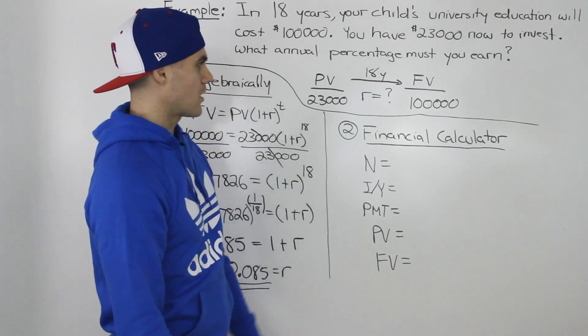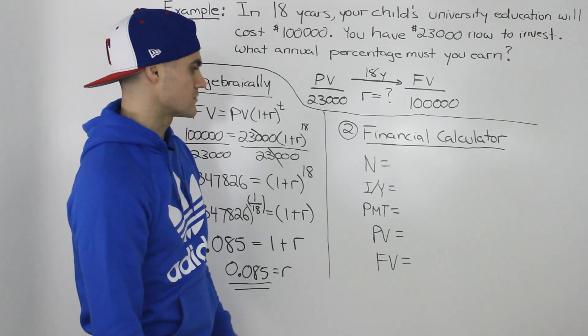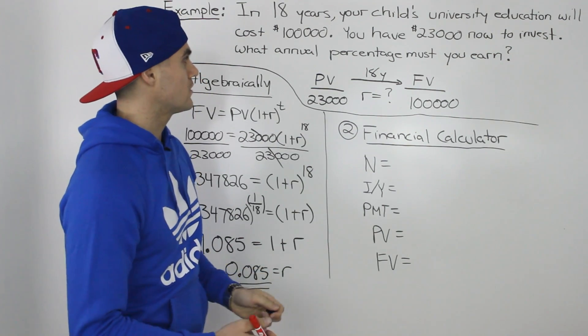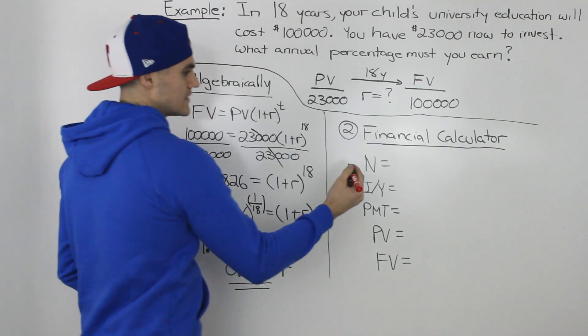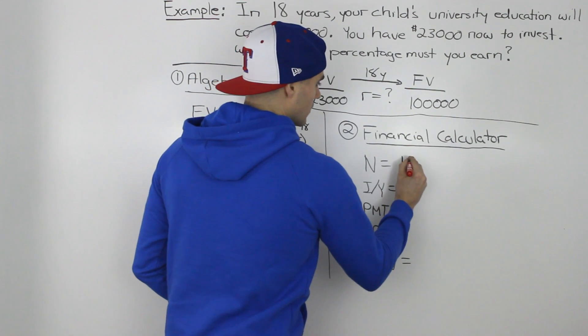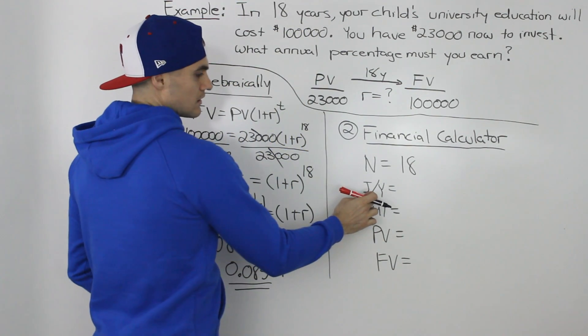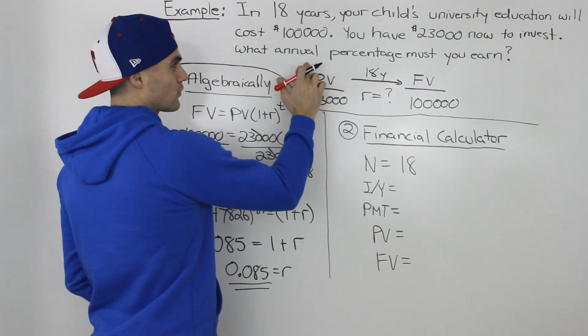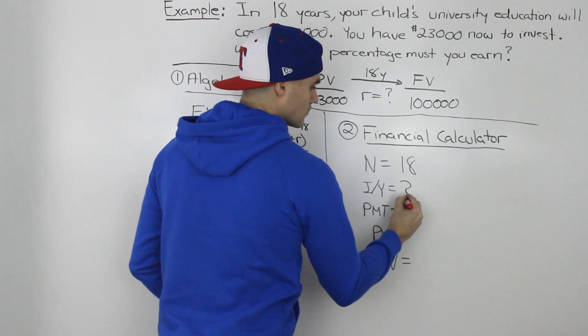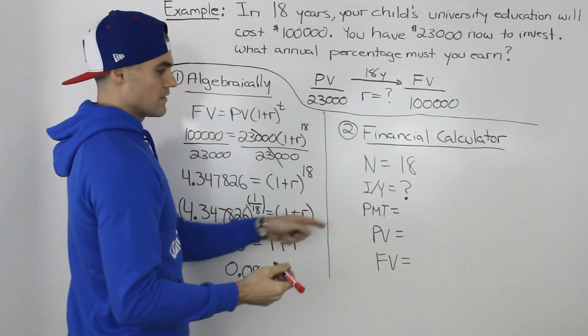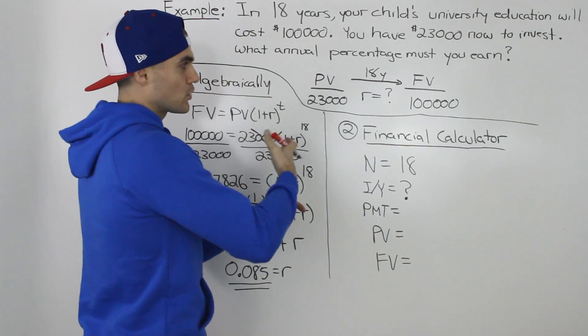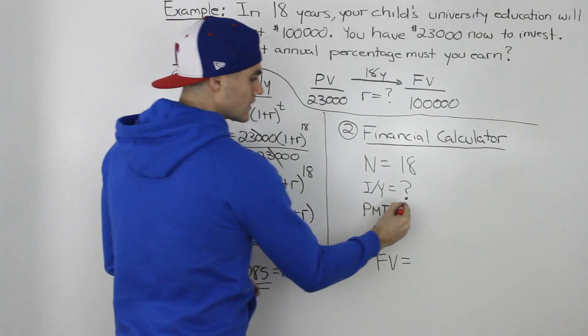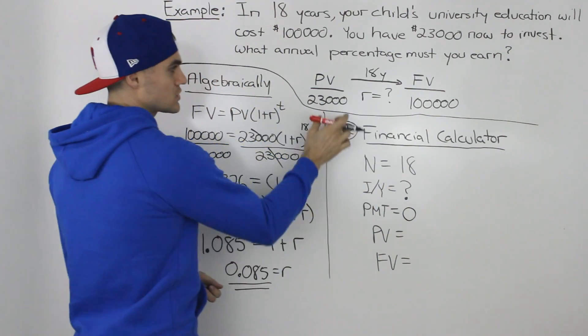We can also solve this problem with a financial calculator. Like usual, write out your five variables. N is the number of periods, and we have 18 years. The interest rate per period is what we're solving for, that annual rate, so that's a question mark. The payment, any cash flows per period - are there any cash flows happening within the period? No there isn't.